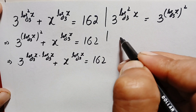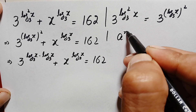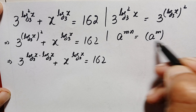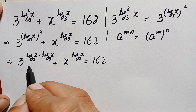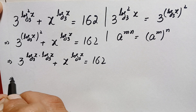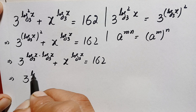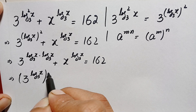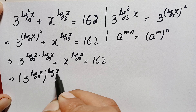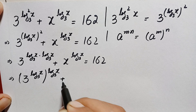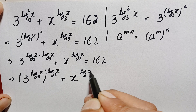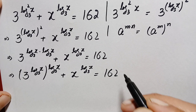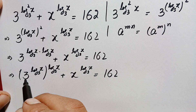Here we will use an exponential identity: a raised to power m times n equals a raised to power m, all raised to power n. Using this identity, the first term becomes 3 raised to power log of x with base 3, all raised to power log of x with base 3, equal to 162.